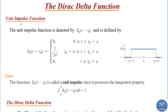Before defining the Dirac delta function, we will discuss the unit impulse function. The unit impulse function is denoted by δₐ(t − t₀) and is defined as 0 for t in the interval 0 to t₀ − a, and 1/(2a) for t in the interval t₀ − a to t₀ + a.